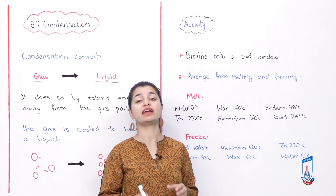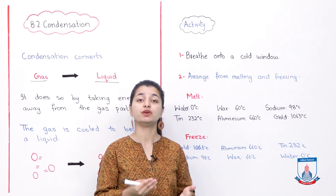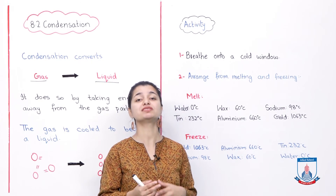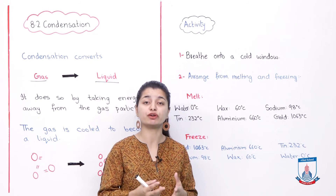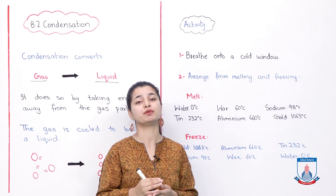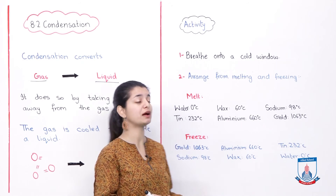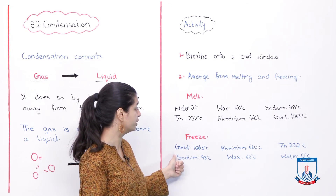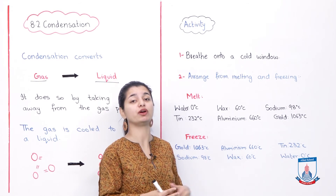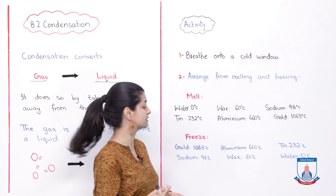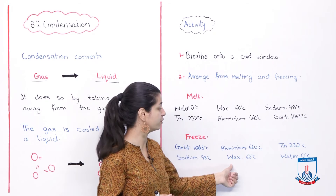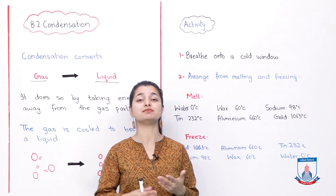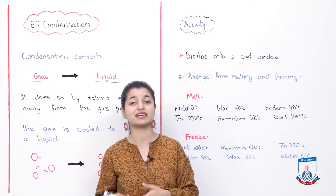Now, if you arrange the substances in freezing point order, it will reverse. Why? Because the higher the temperature at which a substance melts, the more heat it needs, and therefore it will freeze at a correspondingly high temperature. So gold, which melts at 1063 degrees, will freeze first when cooling down from that temperature. Then aluminum, then tin, then sodium, then wax, and finally water. In this way, the order reverses, and you can explain that melting points and freezing points vary for different substances.